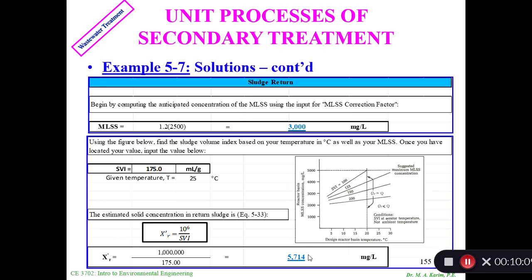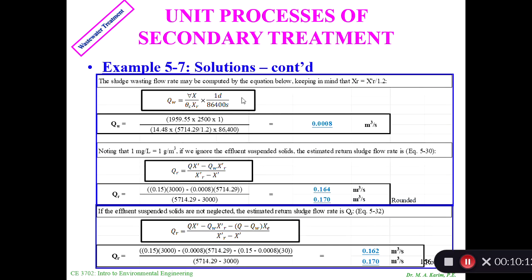This is the recirculation part, so that's fine. Then we can calculate Qw wasting amount using this equation. Qw I get 0.0008 m³/s. Then if we don't consider Xr as negligible, we use this equation and we come up with 0.16 for Qr. If we don't consider Xe as negligible, we use this equation to calculate the value of Qr. We get 0.162, basically the same. That means the value of Xe is kind of negligible here.